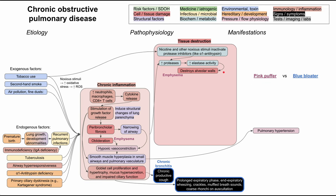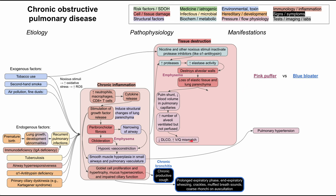When you destroy the alveolar walls, you have loss of elastic tissue and loss of lung parenchyma, leading to more downstream effects. On one end, destroying elastic tissue and lung parenchyma creates a pulmonary shunt, leading to decreased blood volume in the pulmonary capillaries. This leads to an increased number of alveoli that are ventilated but not perfused — a VQ mismatch — with decreased transport of carbon dioxide, decreased DLCO, and increased VQ mismatch.